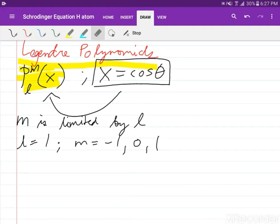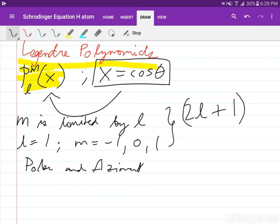We can say that the values of M are limited by this expression 2L plus 1. So now we have solved our polar part and azimuthal part, and we can now patch them up to our angular wave function.